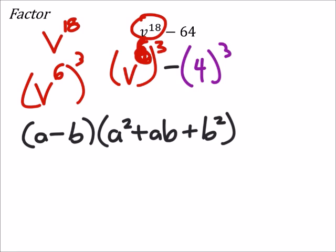That is v to the power of 6 cubed. I apologize because I was squaring in my mind for some reason. So my A is v to the power of 6 minus 4.